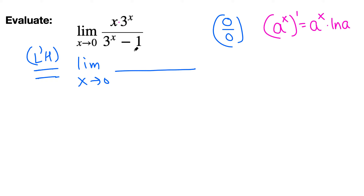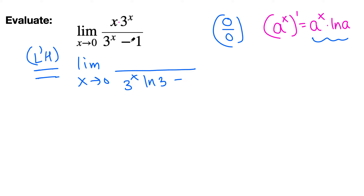Let me do the bottom first because it's easier. The derivative of 3 raised to x, using this rule, gives us 3^x times ln 3. The derivative of 1 is 0, so we don't have to write that.